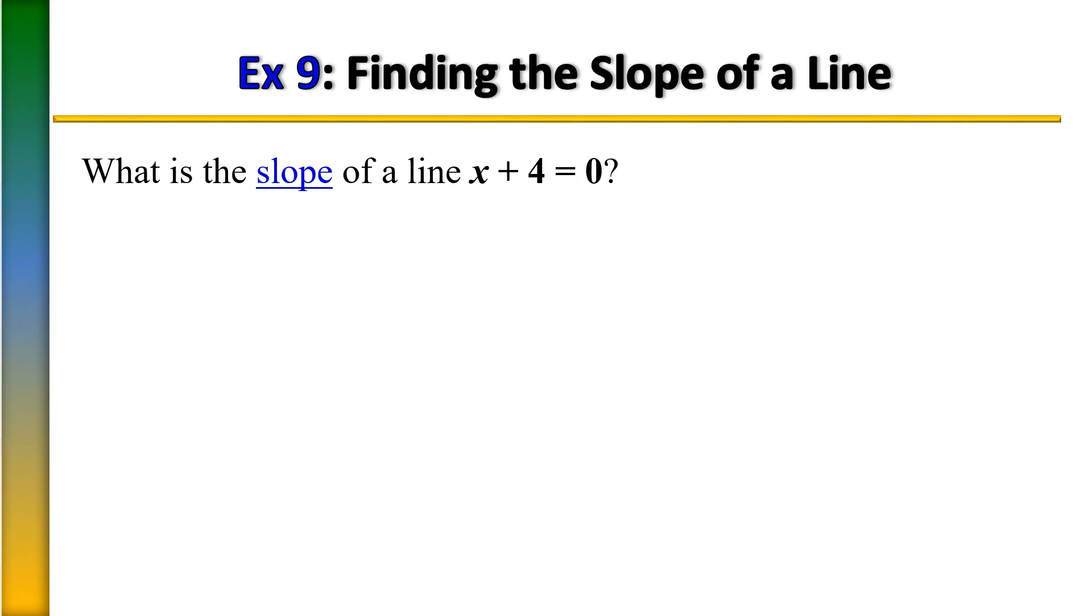In this example we're finding the slope of a line when given the equation. Our equation here is x plus 4 equals 0. Notice here that we do not have a y. Whenever you have only one of the variables, that's an indication that it is either going to be a vertical or a horizontal line. Remember if you have just x only, that is going to be a vertical line passing through the x-axis.